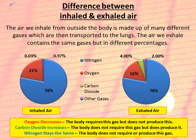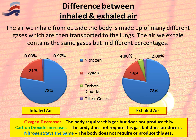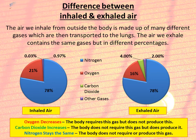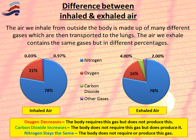The three main gases you need to know — and why their percentages increase, decrease, or stay the same — are as follows. Oxygen clearly decreases because the body absorbs it to fuel the muscles and organs. Carbon dioxide increases because it's a waste product we need to get rid of. Nitrogen stays the same because the body neither requires it nor produces it. Make sure you learn the exact percentages for inhaled and exhaled air.